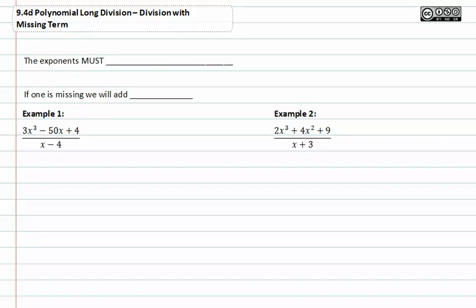Frequently in polynomial long division you'll come across problems where you're missing a term. It's important to remember that exponents must be in descending order or they must count down with no gaps in between.